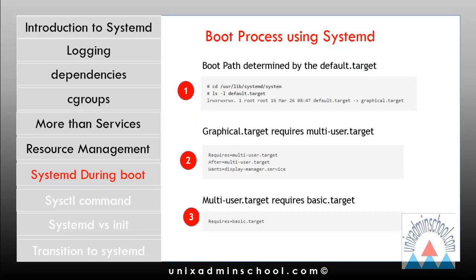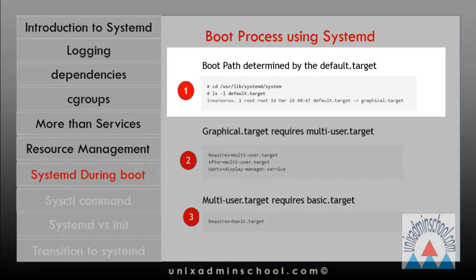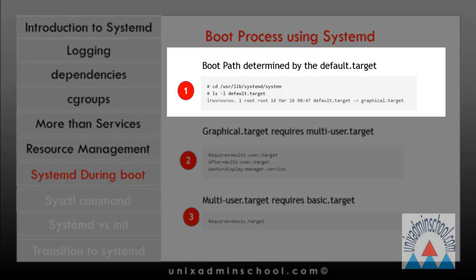So first, how do we identify our default.target? There are two ways: the first is using the systemctl command, and the other is looking at the file default.target located under /usr/lib/systemd/system. If you look at the file default.target, it is actually a symbolic link to graphical.target — that means our default.target on this machine is graphical.target.